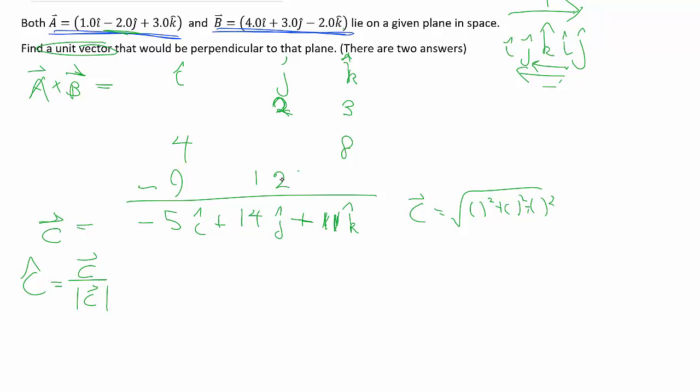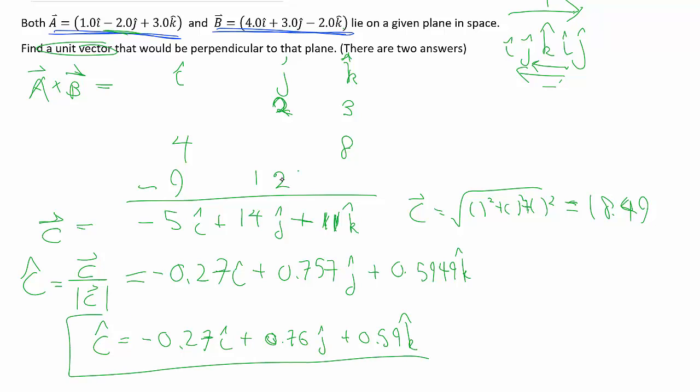Calculator gets you 18.49. And so we will take each of these components and divide by 18.49. And we will get rounding it off to say 2 sig figs. And there's a unit vector that points in a direction that is perpendicular to that plane.